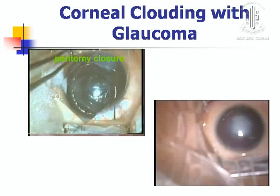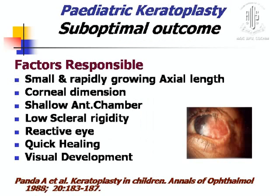In the first stage, you do the glaucoma surgery. For pediatric cornea, we usually take a young donor — here a newborn baby's cornea was used. The outcome of pediatric keratoplasty is always suboptimal. The factors responsible are: the pediatric eye is small and rapidly growing, corneal dimensions are small, it has a shallow anterior chamber, low scleral rigidity, and is a reactive eye. Because of quick healing, suture-related problems are more. Most importantly is the visual development.